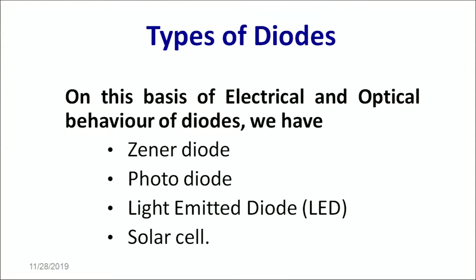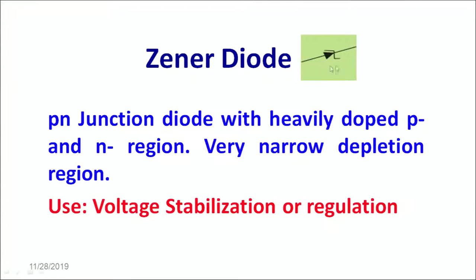A zener diode, a photodiode, a light emitting diode and a solar cell. To begin with, let's talk about the zener diode. This is the symbol of the zener diode. A zener diode typically works in reverse bias. Basically a zener diode is a p-n junction diode with heavily doped p-n region. It has a very narrow depletion region and it is mainly used for voltage stabilization or regulation.